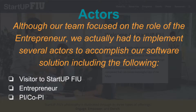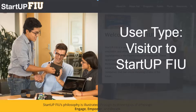There are three different actors in our system. In order to accomplish what our product owner needed, we created three user types: the visitor to StartupFIU, the entrepreneur, and the PI co-PI. Our first actor is a visitor to StartupFIU.